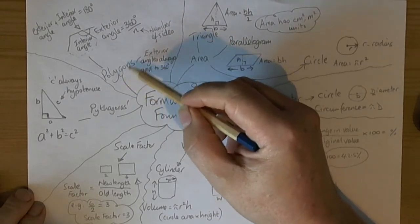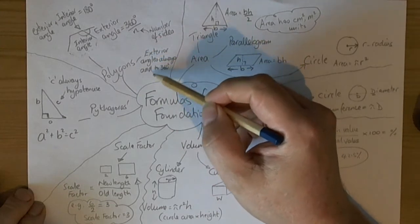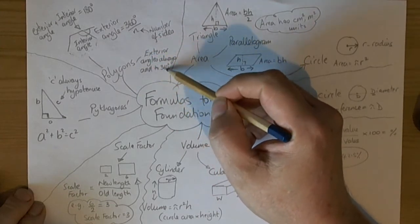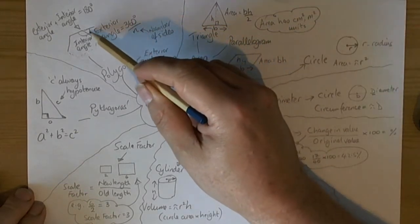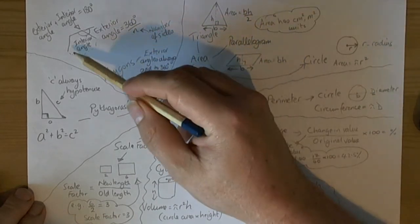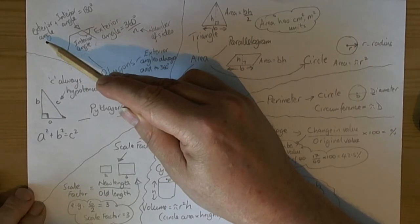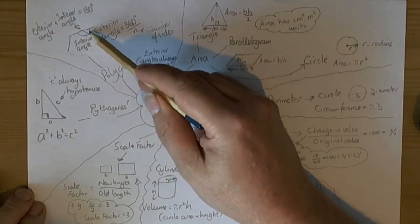We need to remember that the exterior angles going around a polygon all add up to 360. To calculate an exterior angle, the outside angle of a polygon, we do 360 divided by the number of sides. We then need to recognize that the exterior angle plus the interior angle both add up to 180 degrees.